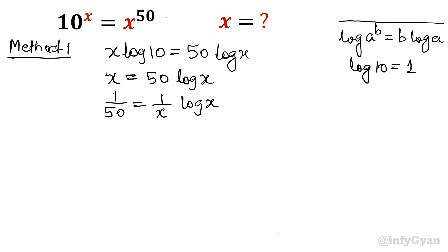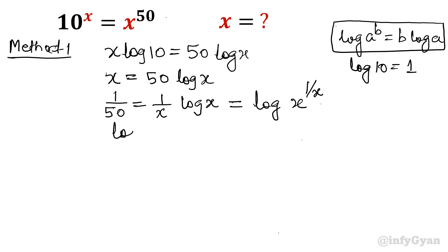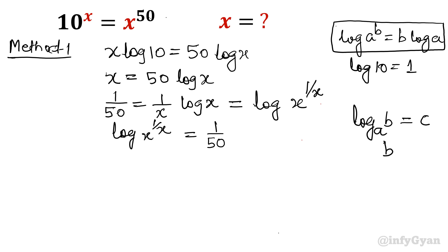Now by this property of log, log a power b can be written as b log a. So you can consider 1 over x as b and log x, so that will be written as log x power 1 over x. So we have log x power 1 over x is equal to 1 over 50. Now in exponent form, that becomes x power 1 over x is equal to 10 power 1 over 50.